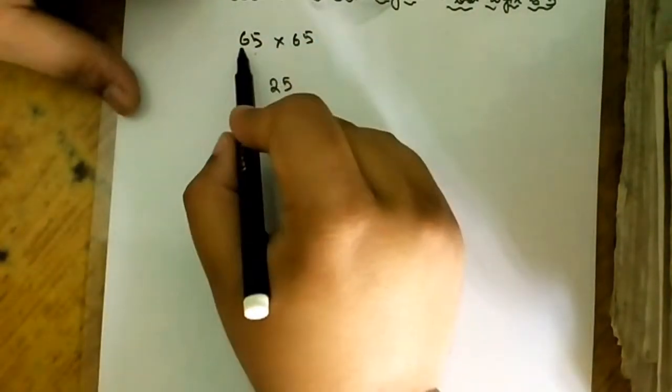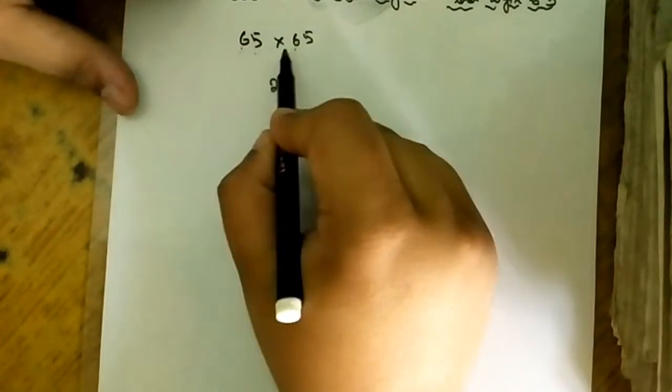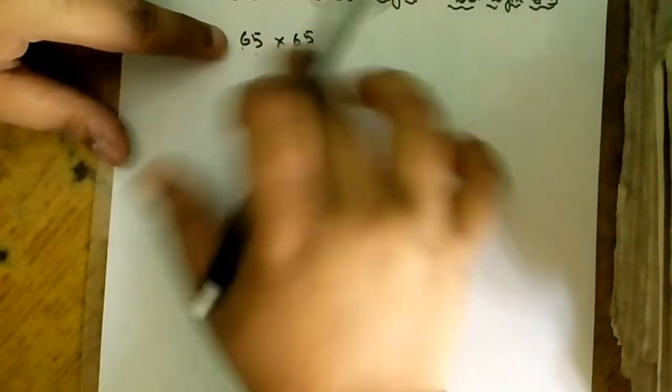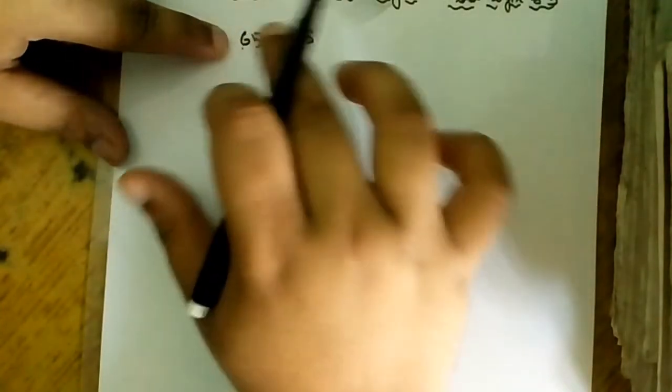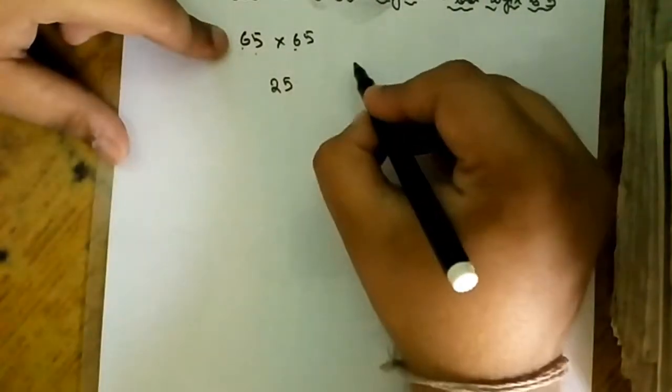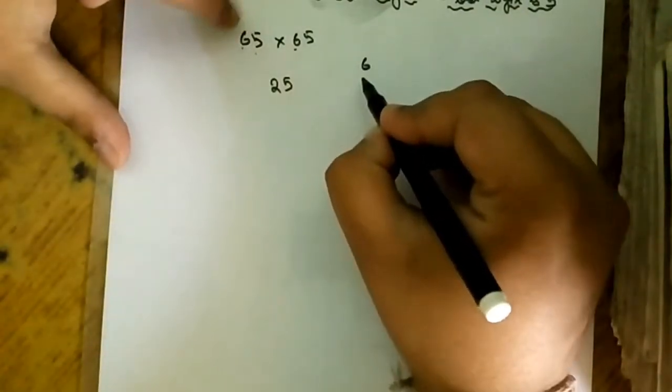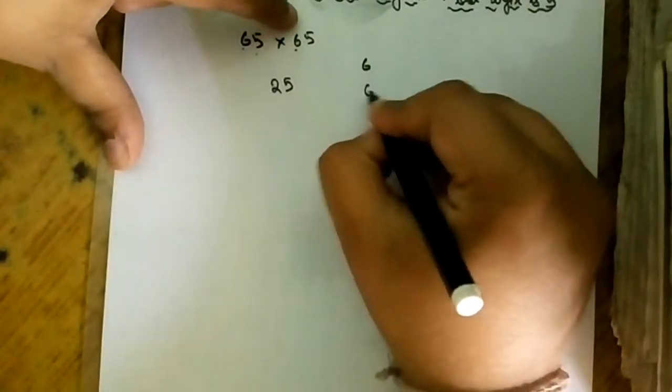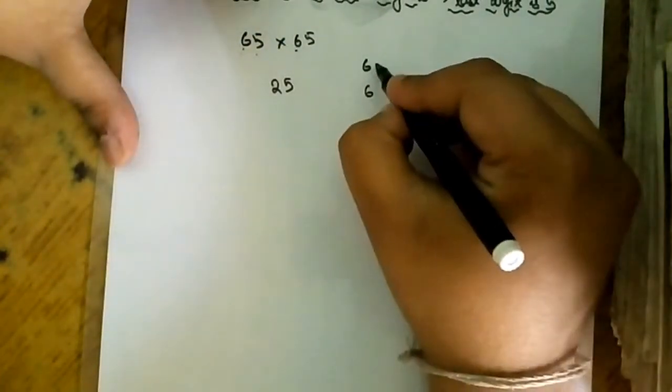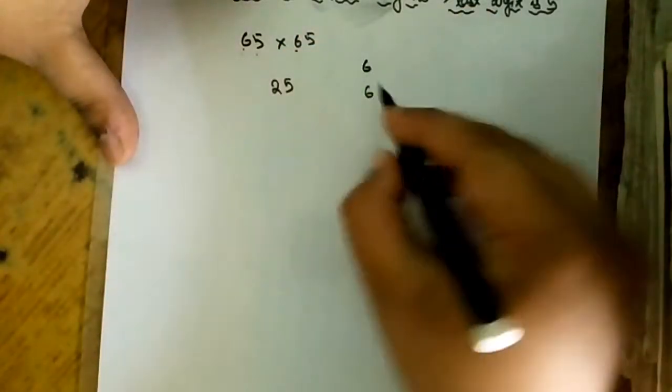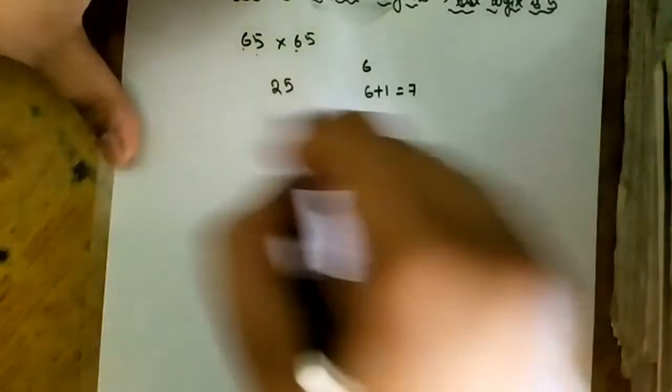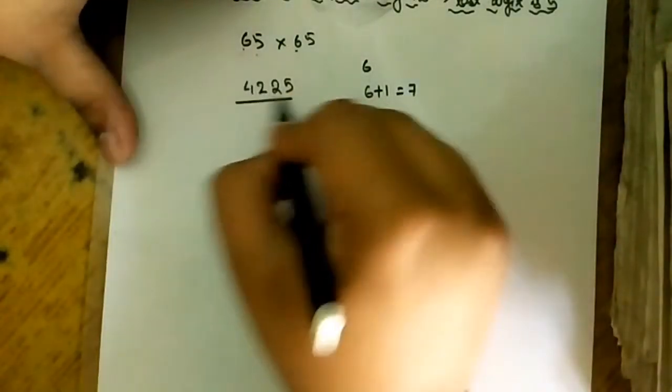Now the number which is remaining, that is 6, which is the tens digit number. In both numbers the tens digit is the same. What you have to do is write the tens digit number: 6 and 6. Now I will add 1 with any 6. If I add 1 then 7. Now 7 into 6 is equal to 42. This is the required answer.